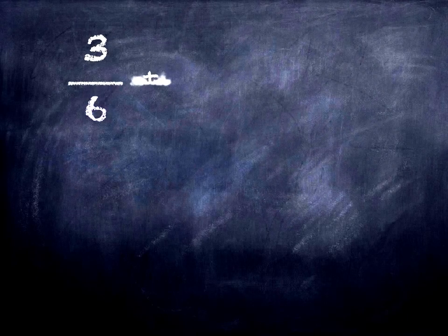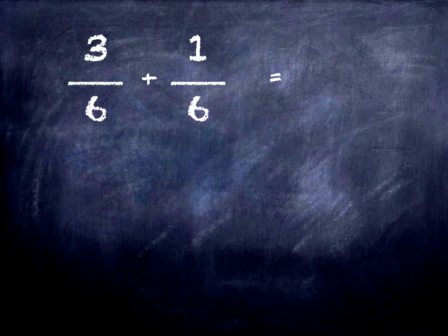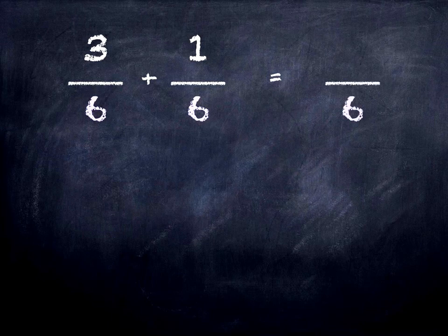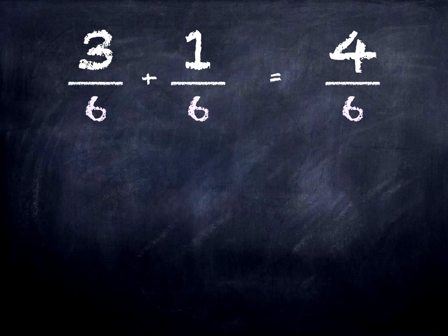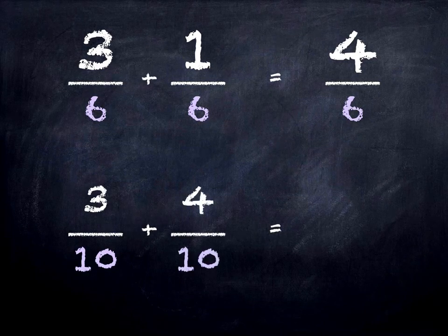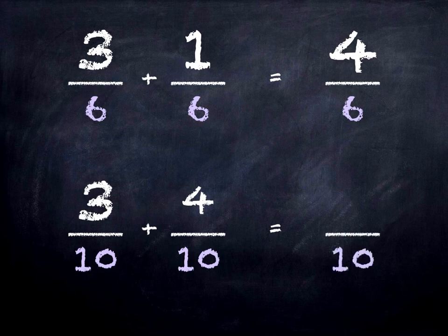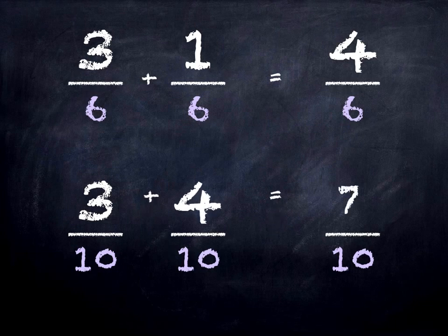Three tenths plus four tenths is how many tenths? Three plus four equals seven. So three tenths plus four tenths equals seven tenths.